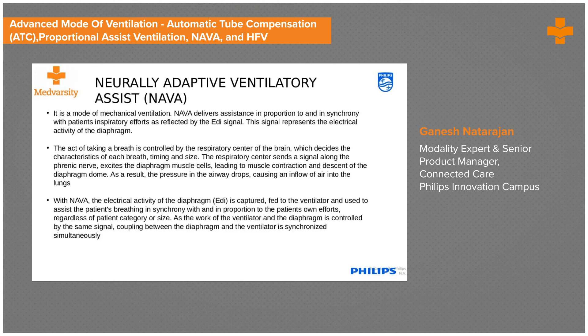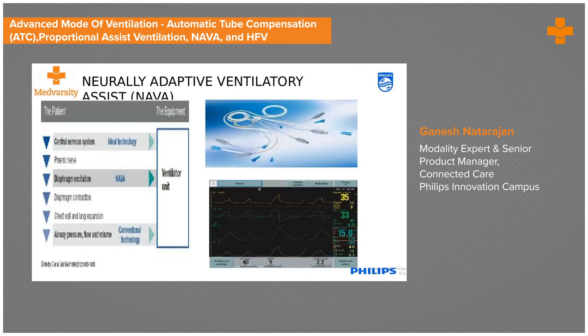NAVA reduces the work of breathing because the patient does not need to displace a certain pressure or flow for the machine to respond. From the diaphragmatic flutter itself, the machine understands that the patient wants to breathe. On screen, there is an additional signal shown as a graph called the EDI, which indicates the patient's potential to breathe — whether the patient is going to breathe in the next few microseconds. NAVA is more of a faster trigger than a mode, but it is set in the machine as a mode.